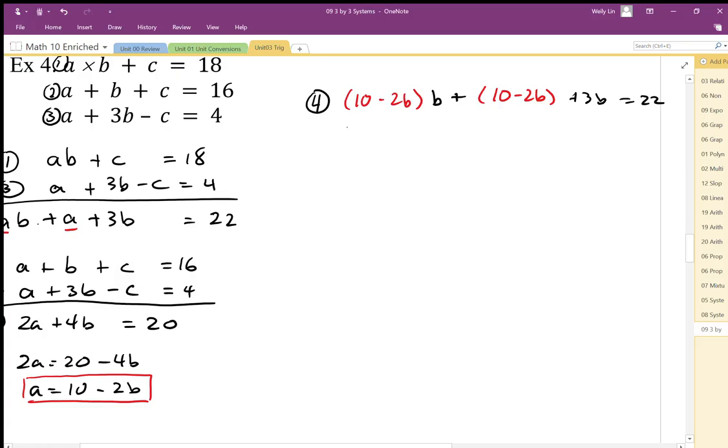So I'm going to multiply this out. I end up with 10b minus 2b squared, plus 10 minus 2b, plus 3b equals 22. I'm just going to combine my like terms first. So 10 minus 2 plus 3 is 11b, minus 2b squared, plus 10 equals 22.